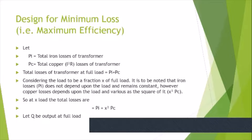Let PI be the total iron loss of the transformer, PC be the total copper losses of the transformer. The total losses at full load equals PI plus PC. Considering the load to be a fraction x of full load: iron losses do not depend upon the load and remain constant, however copper losses depend upon the load and vary as x squared times PC. So at x load, total losses equal PI plus x²PC.